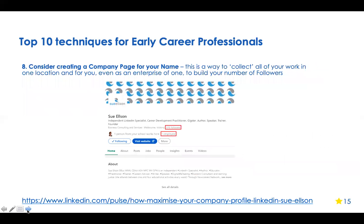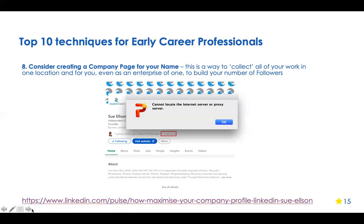Technique eight: create a company page for your name. You might say 'but I'm not a company' — but the benefit is that I've got 515 followers on mine with only one employee. When I publish content under my personal name it gets lost in the news feed and only lasts a couple of days, but when I put it on my company page it stays visible for at least 12 months. So every time I post as a person, I also post on my Sue Elson company page.